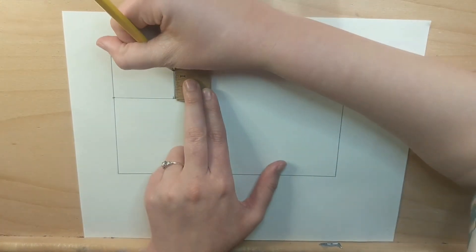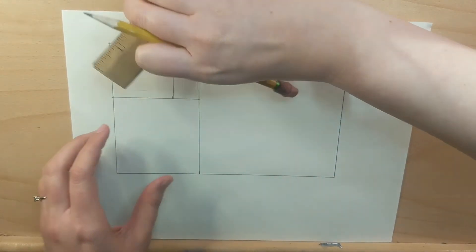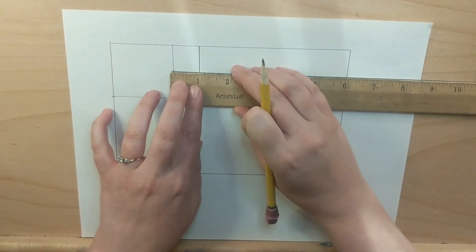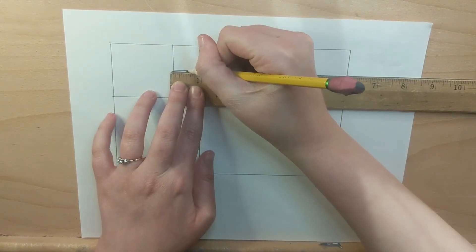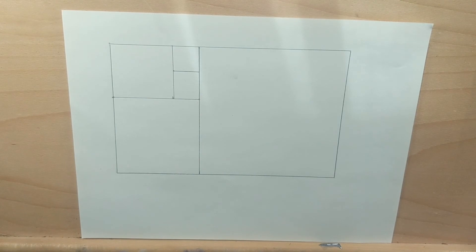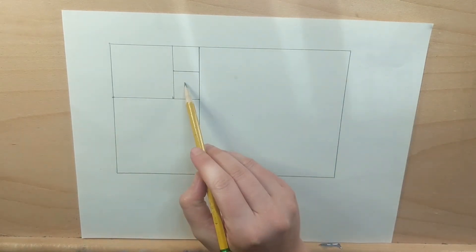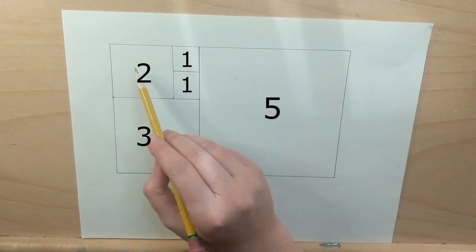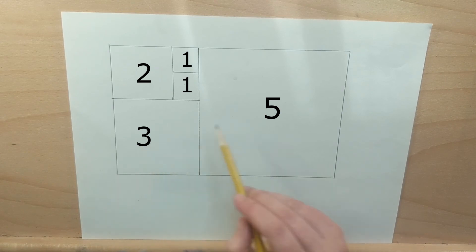So now we have all these squares where the area for each square in square inches is the numbers that correspond to the Fibonacci sequence.